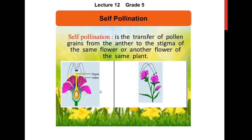Self-pollination is the transfer of pollen grains from the anther to the stigma of the same flower, or another flower of the same plant. Look at this picture — the pollen grains are being transferred from the anther to the stigma of the same flower. In the second case, this is the same plant but two different flowers, and the pollen grains are transferred from the anther to the stigma of a flower on the same plant.